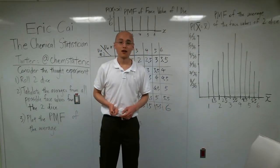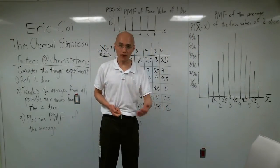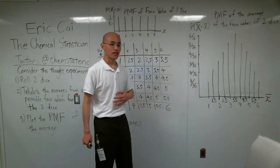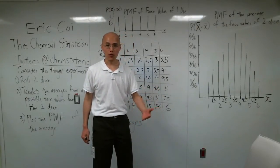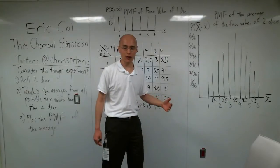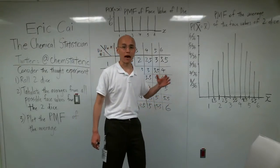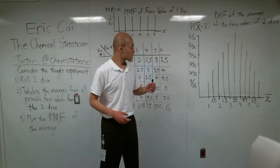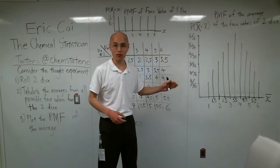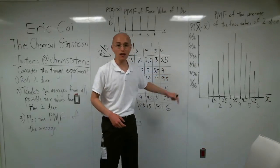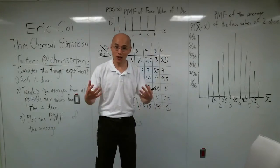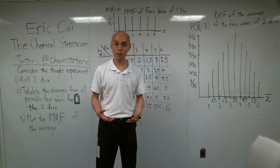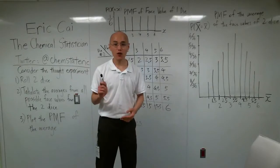Now, remember, the average in this case is a discrete random variable with 11 possible values. This is a probability mass function. However, what continuous random variable's distribution does that plot look like? It looks like the normal distribution, doesn't it? And that is not a coincidence.